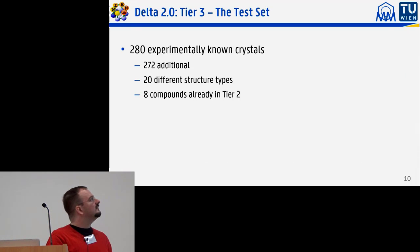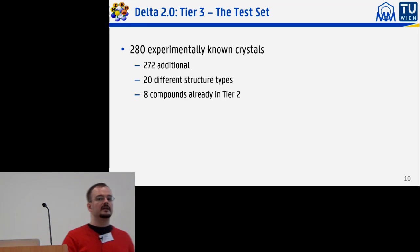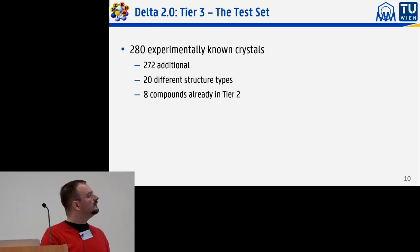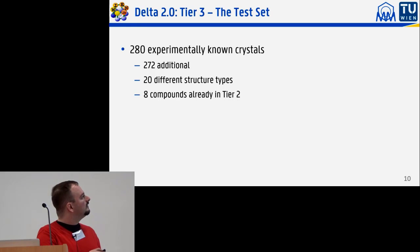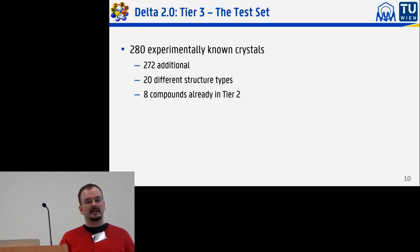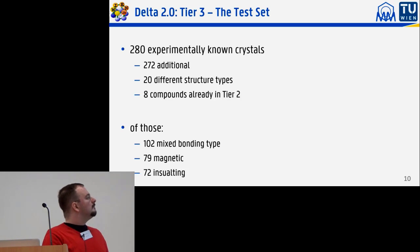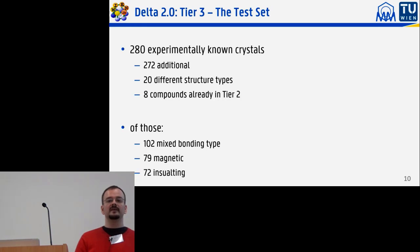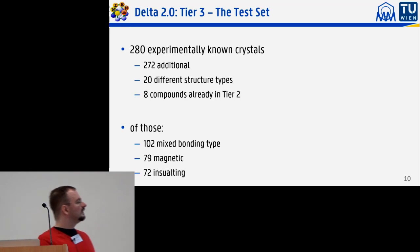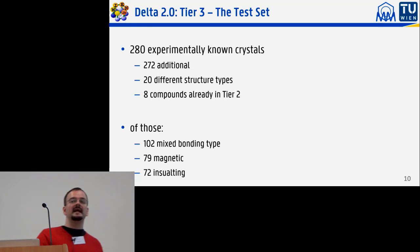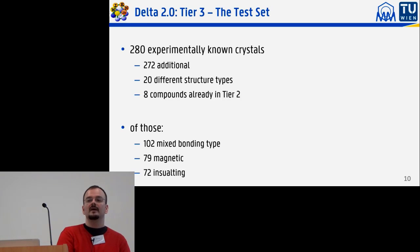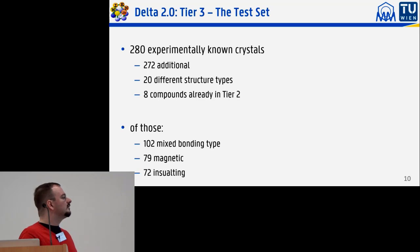To summarize the Tier 3 test set: I found 280 additional experimentally known structures, of which 272 are new and 8 are oxides from the prior test set. There are 20 usable different structure types. However, 102 cases are of mixed bonding type and could not be clearly classified. I found 79 magnetic ones. Additionally, whereas the existing 570-case set has only about 40 with a PBE band gap, the Tier 3 set adds 72 more gapped cases.